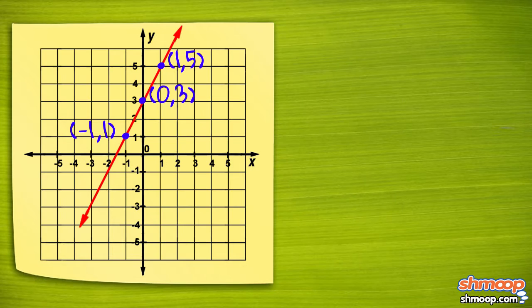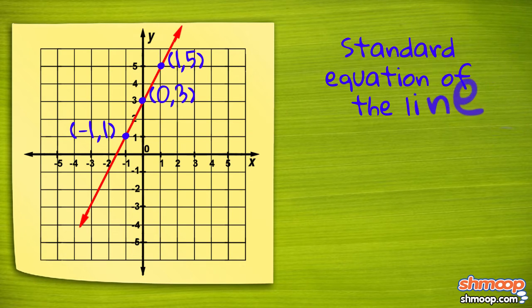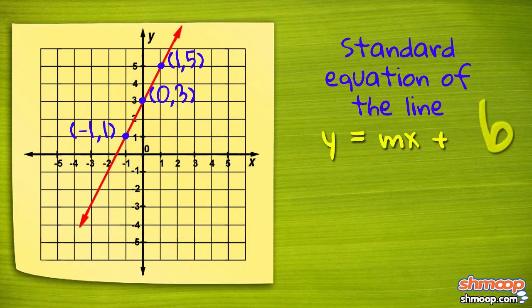To find the function rule of the line, we can use the standard equation of a line: y equals mx plus b.